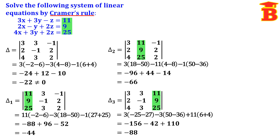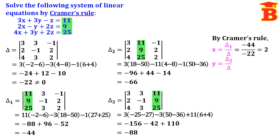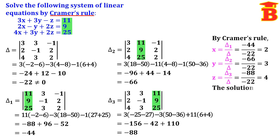Now we have del 1, del 2, del 3, so we apply Cramer's Rule. x equals del 1 by del: minus 44 divided by minus 22 equals 2. y equals del 2 by del: minus 66 divided by minus 22 equals 3. z equals del 3 by del: minus 88 divided by minus 22 equals 4. Therefore the solution is x equals 2, y equals 3, z equals 4.